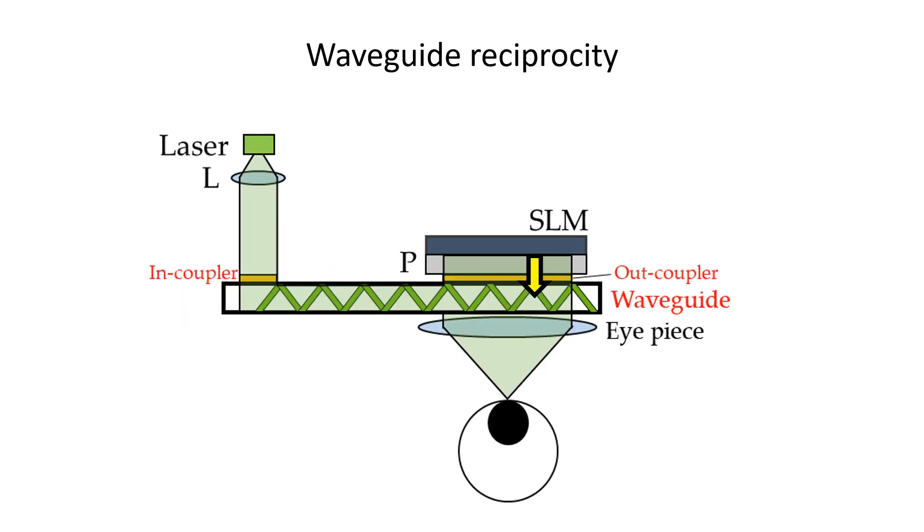Second, what happens when the diffracted lights meet the waveguide again? The grading will couple some light back into the waveguide because of the reciprocity based on the diffraction efficiency, which is designed to be low. So most of the light passes through the waveguide and that's why we can observe outside views in waveguide based AR displays. The remaining uncoupled light forms a holographic image.